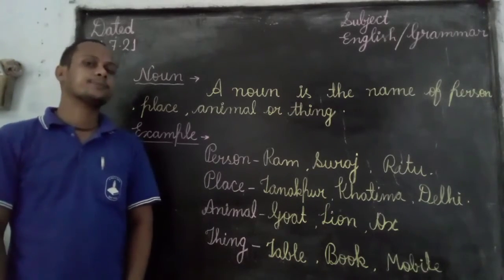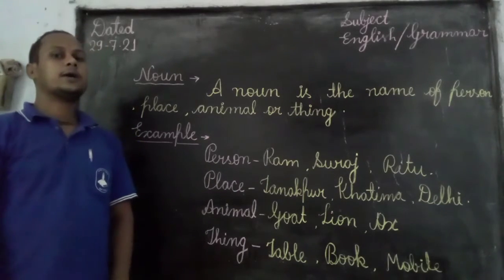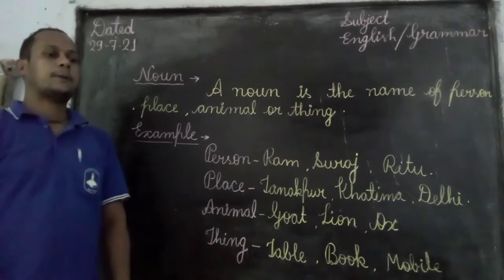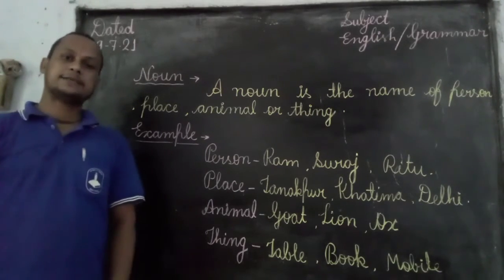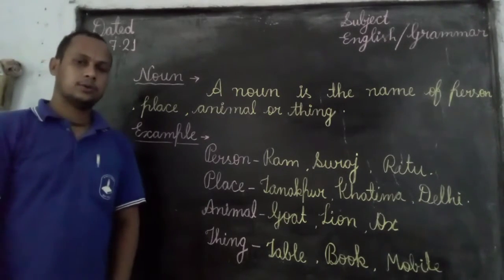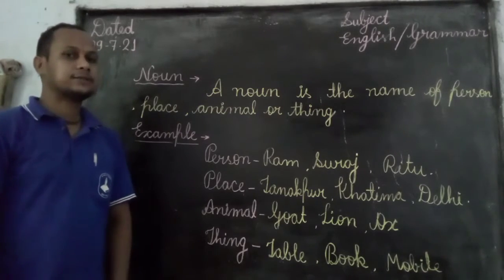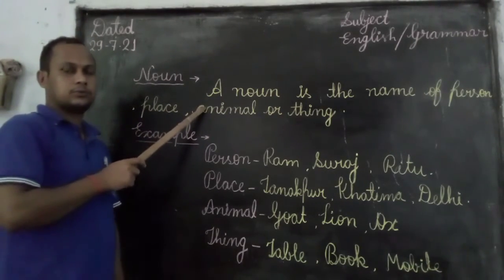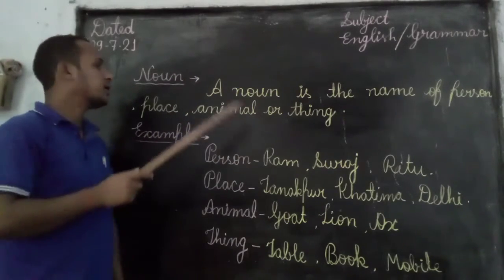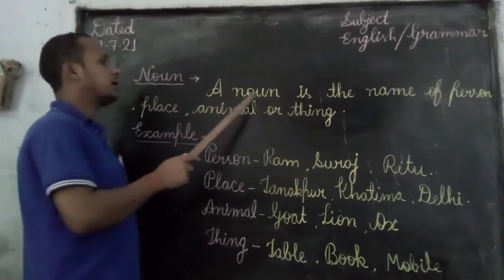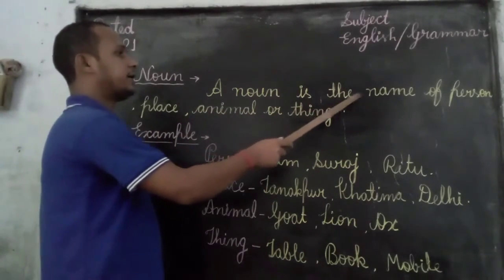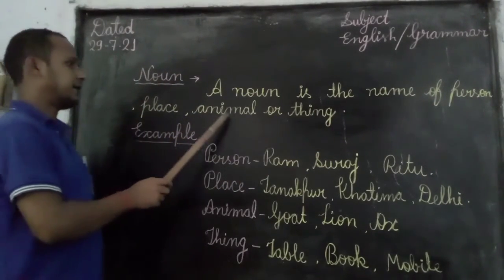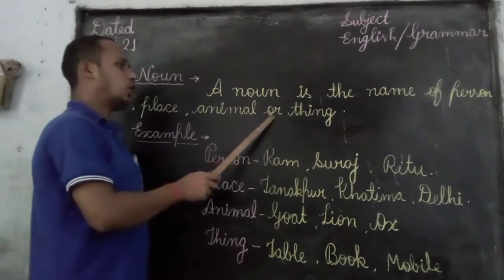Good morning brothers and sisters. Today we will know about noun. Definition of noun: a noun is the name of person, place, animal or thing.